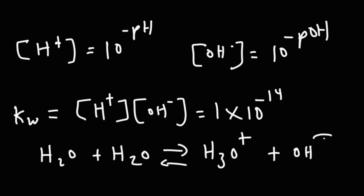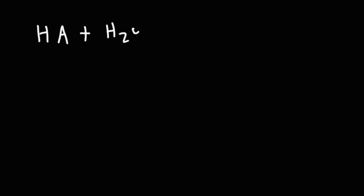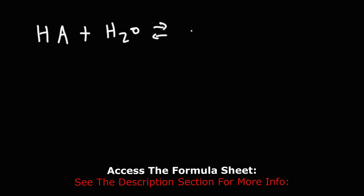Water can react with itself — one water molecule will accept a proton and the other will lose it, so water can ionize into hydronium and hydroxide. This value holds true at 25°C and can change with temperature. Now let's talk about finding the pH of a weak acid. If you have a weak acid like HF, or using a generic acid HA, it's going to react with water and release a proton.